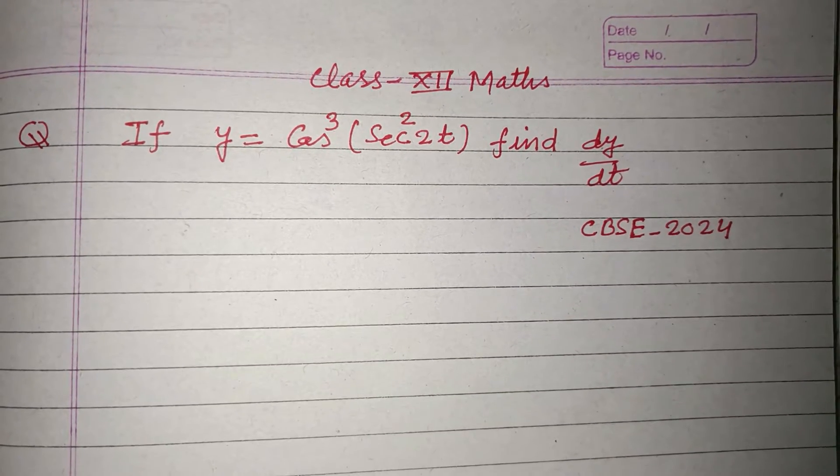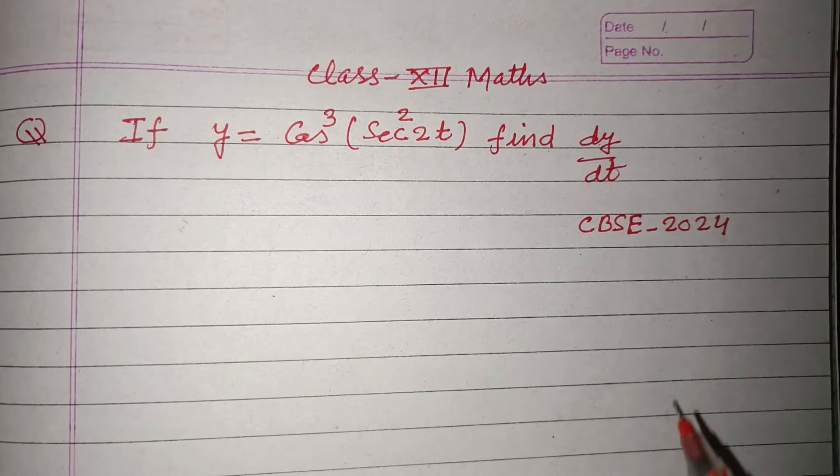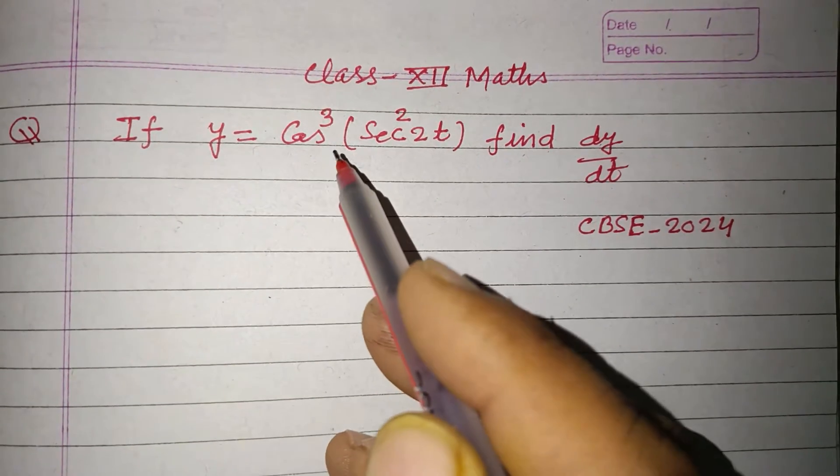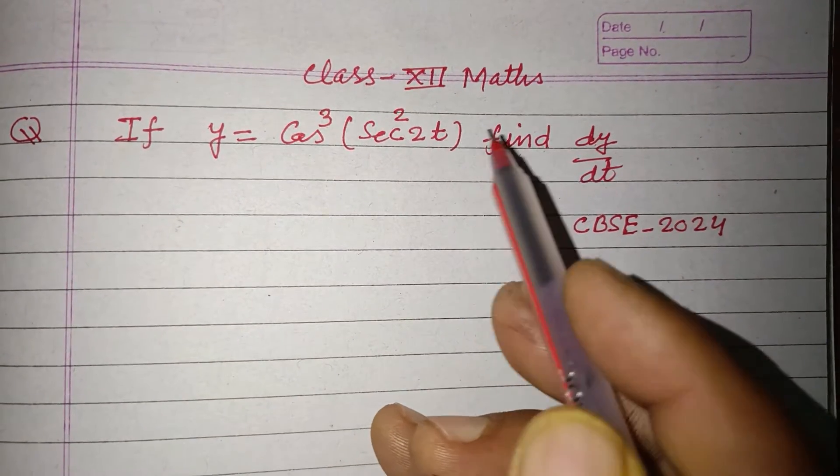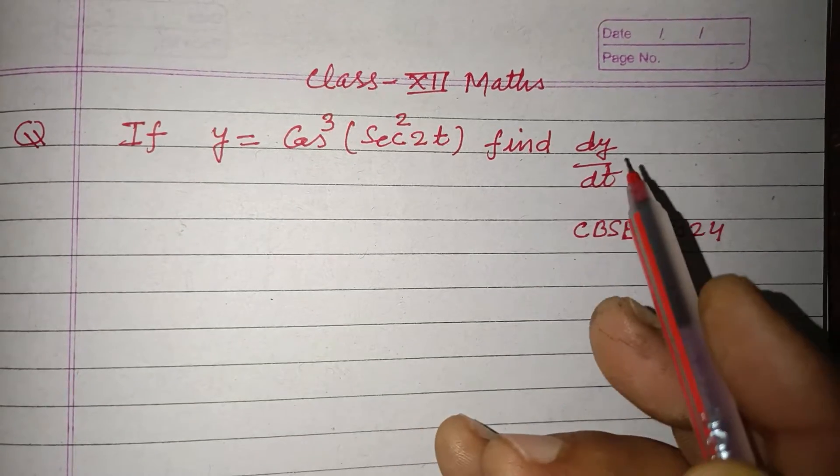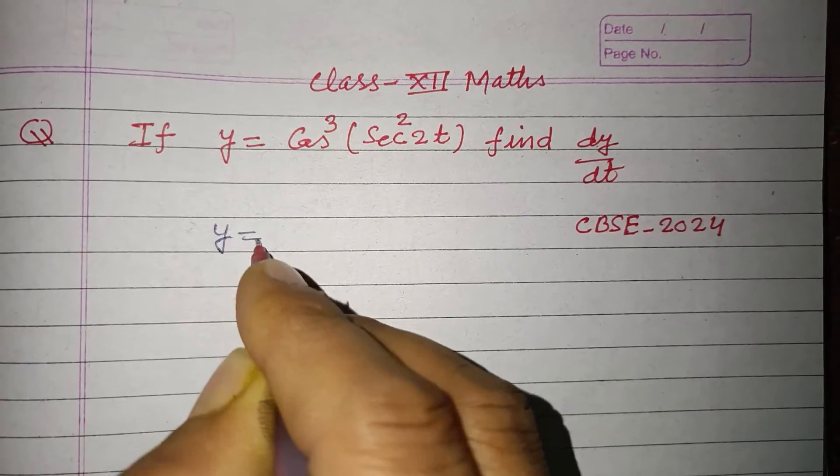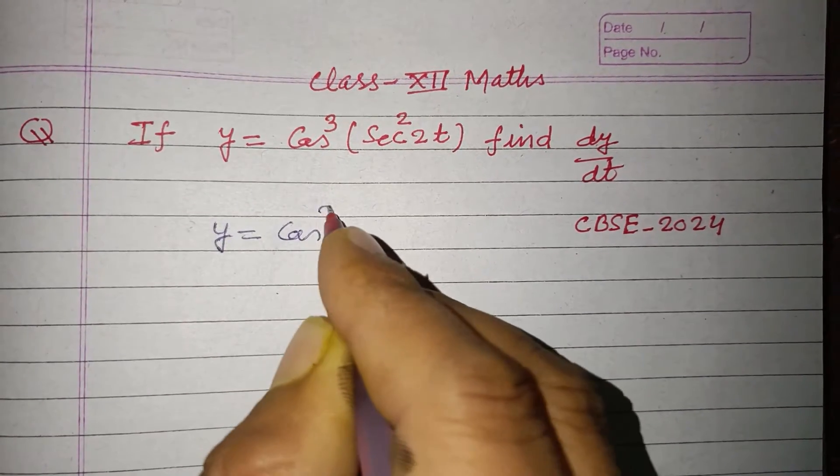Hello viewers, welcome to this YouTube channel. This is a question from CBSE board exam 2024, class 12. If y equals cos³(sec²(2t)), find dy/dt. So here it is given that cos³(sec²(2t)).